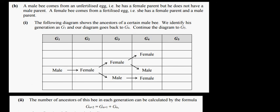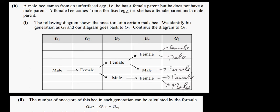We continue the diagram to G5. Each female comes from a female and a male; each male comes from just a female. So the number of ancestors per generation is: 1, 1, 2, 3, 5. And with G5 we have 1, 2, 3, 4, 5 ancestors. This is actually a Fibonacci sequence.